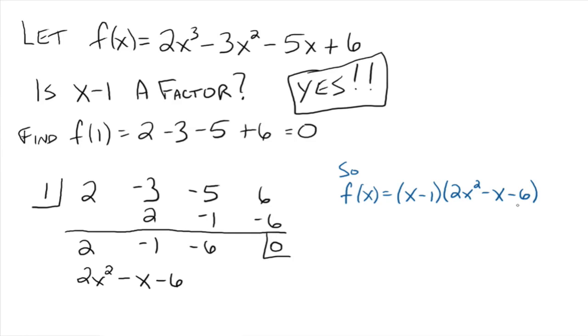But now let me ask you, does 2x² - x - 6 factor? Yes, it does. So we have x minus 1, then 2x² - x - 6 factors into 2x + 3 times x minus 2. Everybody see that?